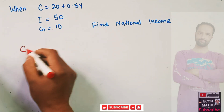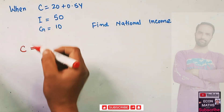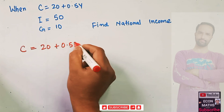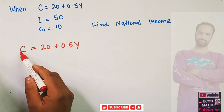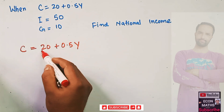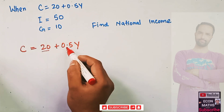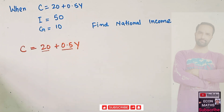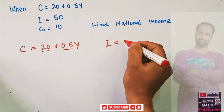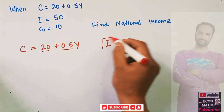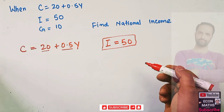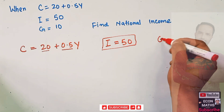C is our consumption — they tell us consumption is a function of income, so consumption will increase if income increases. The constant 20 denotes autonomous consumption, and 0.5 is our marginal propensity to consume. We are also given that I equals 50, which is our autonomous investment — the investment that does not depend upon the level of interest rate.